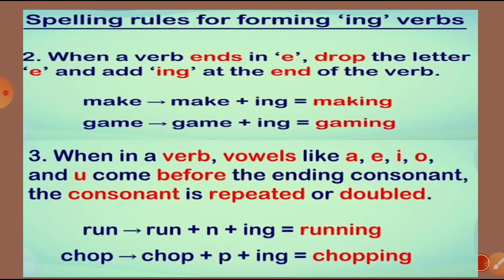When in a verb, vowels like A, E, I, O, U come before the ending consonant, the consonant is repeated or doubled. For example, Run — we add ING and double the last letter: Running. Chop becomes Chopping.